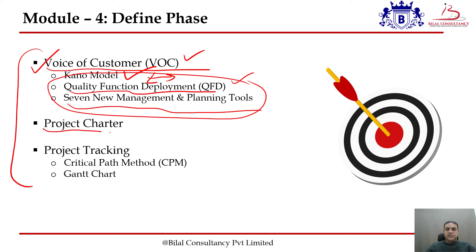Then, we will develop a project charter, which is basically a document in which we mention all the things: what are the benefits of doing this particular project, how long it would take to complete it, what would be our Critical to Quality, or what would be our KPI, and so on. All these things are mentioned in the project charter, which is a document indicating the starting and the improvement perspective.